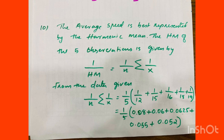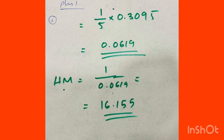We put 1/N × sigma(1/X): that is 1 divided by (1/12 + 1/15 + 1/16 + 1/18 + 1/19). Converting to decimals: 1 divided by 5 into (0.083 + 0.067 + 0.0625 + 0.056 + 0.053). The average speed is approximately 16.155 km per hour.